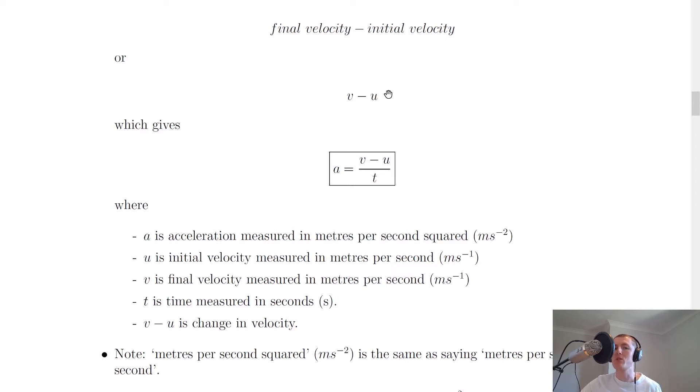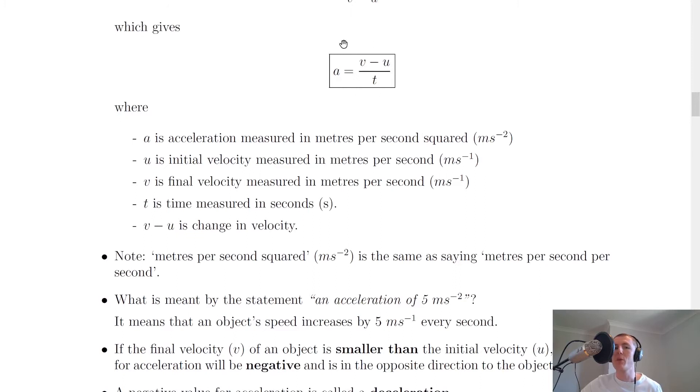And a useful way to remember which one's which is that u comes before v in the alphabet. So u is initial velocity and v is the final velocity, or the first velocity and the second velocity. So putting that together, we end up with our equation for acceleration, and it says that a equals v minus u over t. So the acceleration of an object is equal to the final velocity minus the initial velocity of the object divided by the time taken.